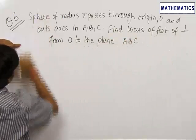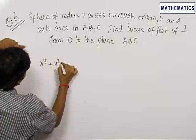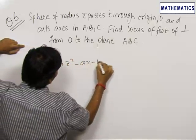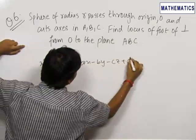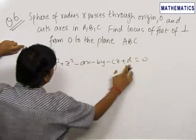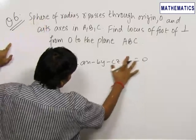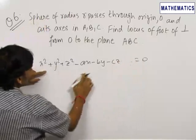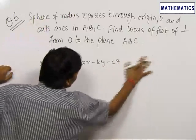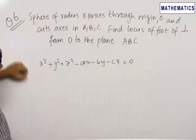Let us first write down the equation of the sphere. It will be x² + y² + z² − ax − by − cz + d = 0. Since this sphere passes through the origin, the constant term will be equal to 0, because on putting (0, 0, 0) it should satisfy this equation. Therefore, we have removed the constant term and this is the remaining equation of the sphere.